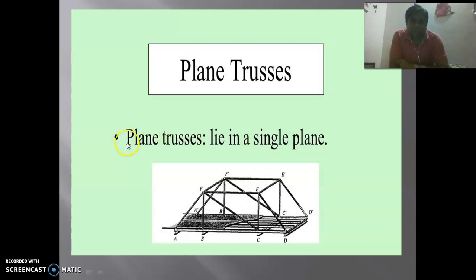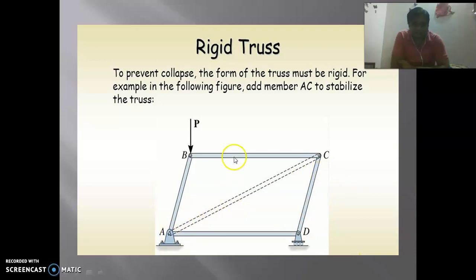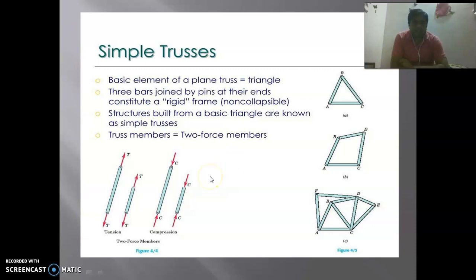A plane truss has all members essentially lying in a single plane. For a rigid truss, to prevent collapse, the form of the truss must be rigid — for example, by adding one extra member AC to stabilize the truss. For a simple truss, the basic element is a triangle, and structures built from that basic triangle are known as simple trusses.